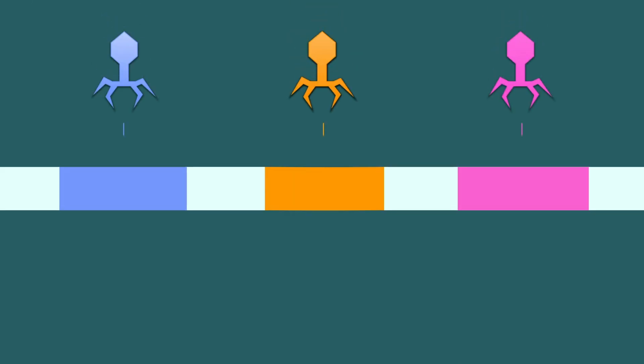In between these chunks of useful DNA, there are slightly less useful chunks of repetitive DNA keeping them separate, like a divider between each viral segment. These repeating segments of DNA are what gives CRISPR its name.